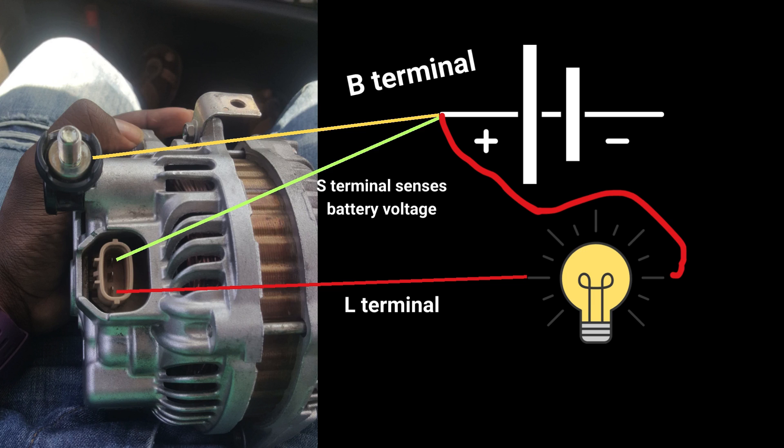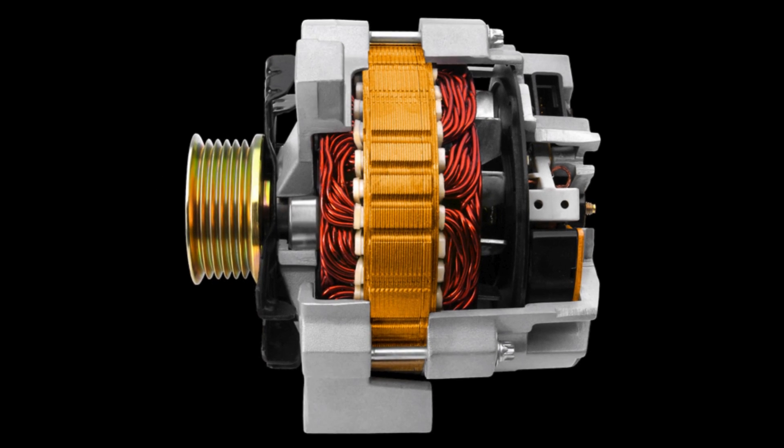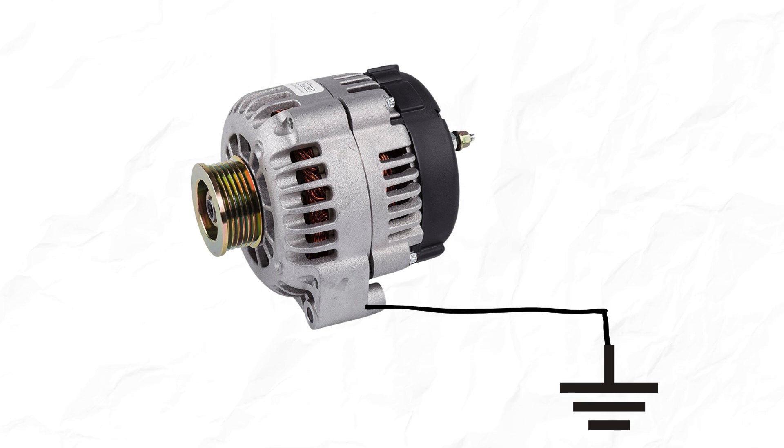The IG terminal of the alternator allows direct DC current from battery to alternator through the ignition switch to excite the field coil of the alternator. The alternator's casing is often used as the ground or earth connection.